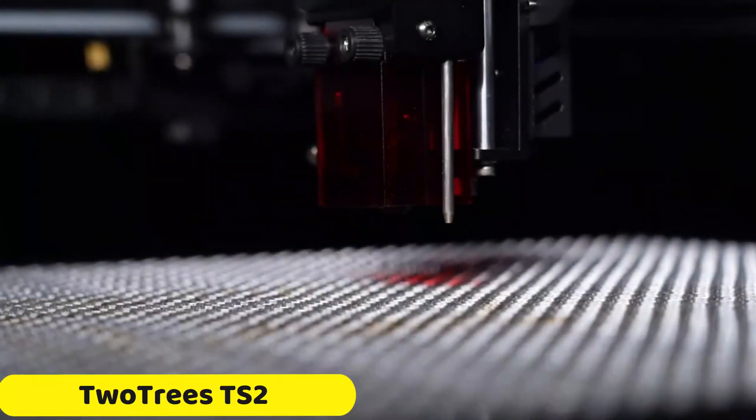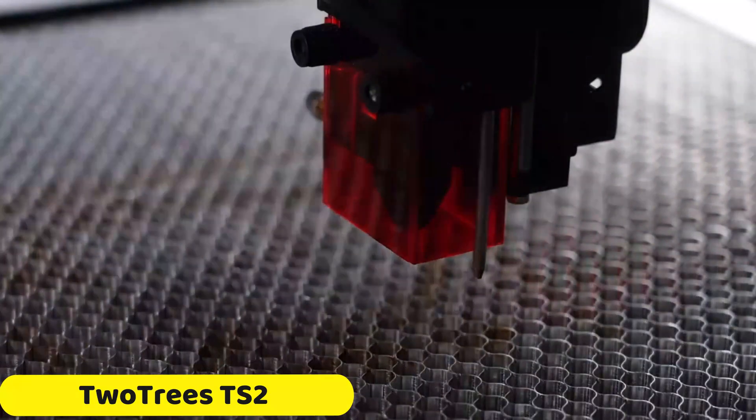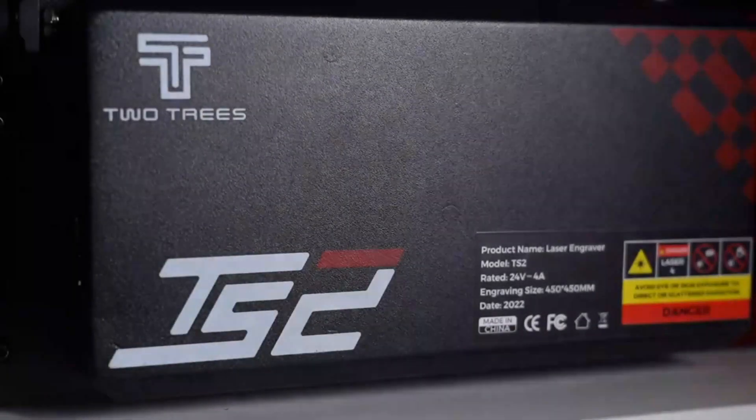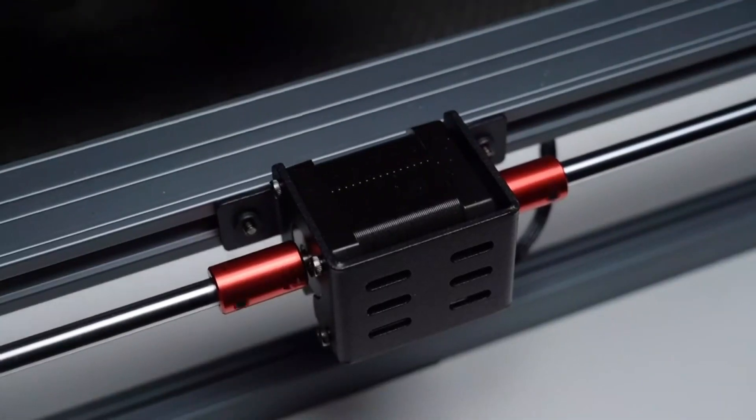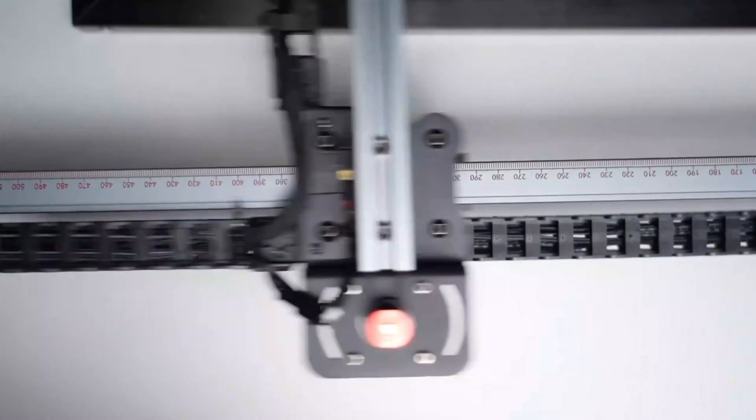2trees TS2 Laser Engraver. The 2trees TS2 Laser Engraver is a versatile and efficient tool that offers precision, versatility, and ease of use. Its design is a perfect blend of form and function, with a durable yet lightweight frame, measuring 733 x 721 x 172mm.